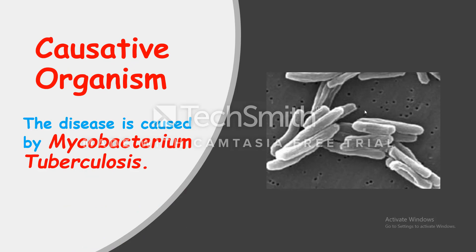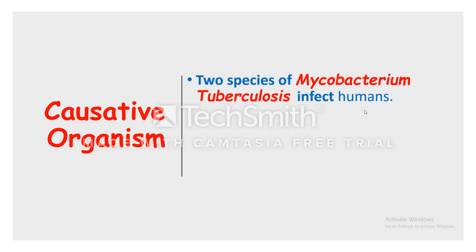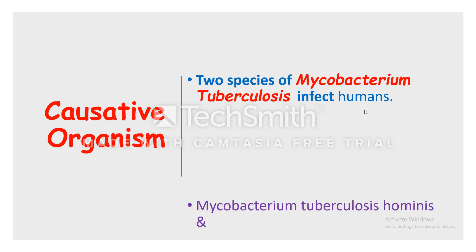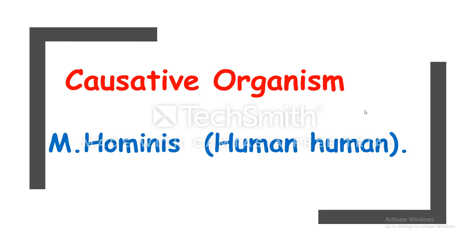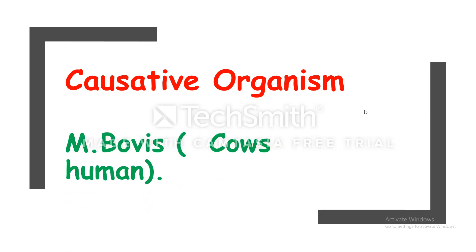The causative organism is Mycobacterium tuberculosis. There are two species that can infect humans: Mycobacterium tuberculosis hominis, where the reservoir is human and infection spreads human to human, and Mycobacterium tuberculosis bovis, which spreads from cows to humans.